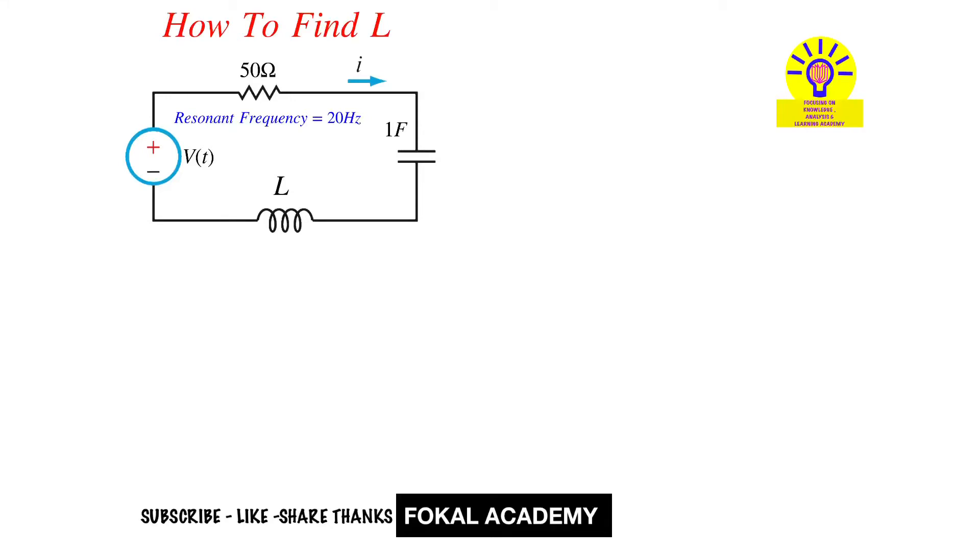In this problem, a series RL circuit is given with a resonant frequency of 20 hertz. The resistance is 50 ohms and the capacitance is 1 faraday. What is the inductance value and how can you find it?